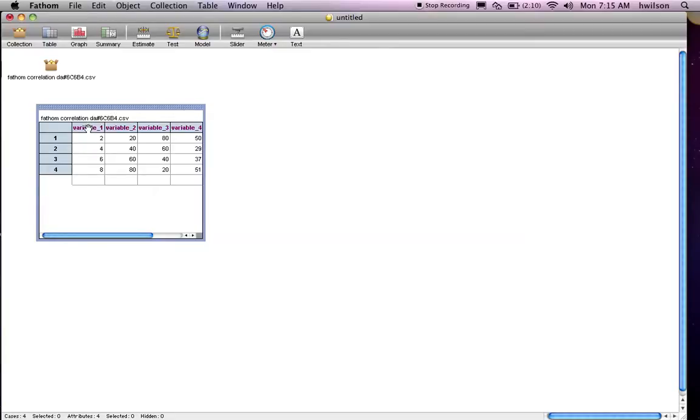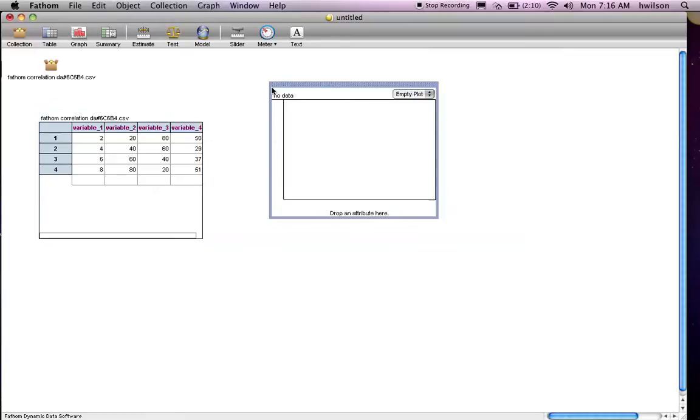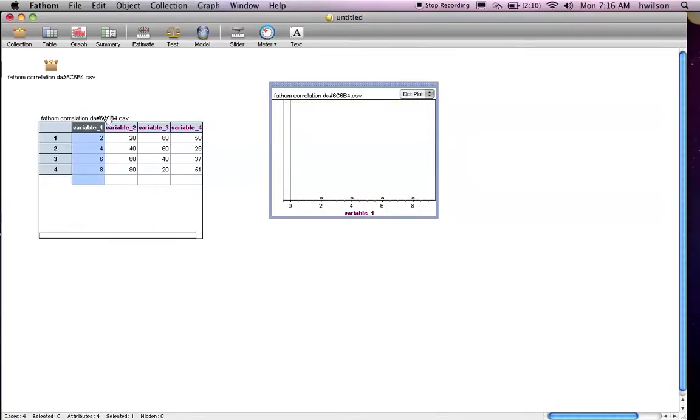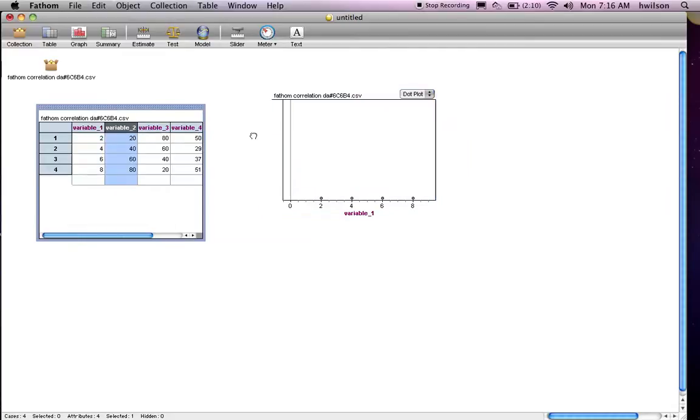For example, the correlation between variable 1 and variable 2, between variable 1 and variable 3, and variable 1 and variable 4. Let's look at correlation before we calculate it. So I select it. I'm going to create a graph. Click on one of the variables and drag it to the x-axis. Do the same thing for variable 2. I'm going to drag it to the y-axis.